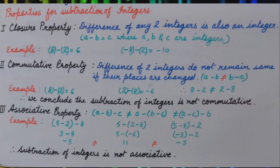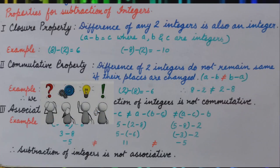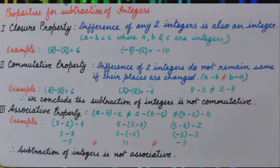Second property, commutative property. Commutative means we change their places. So what happens if we change the places in subtraction? For example, if we subtract 8 minus 2 that is 6 and if we interchange their places that is 2 minus 8, then it is minus 6.